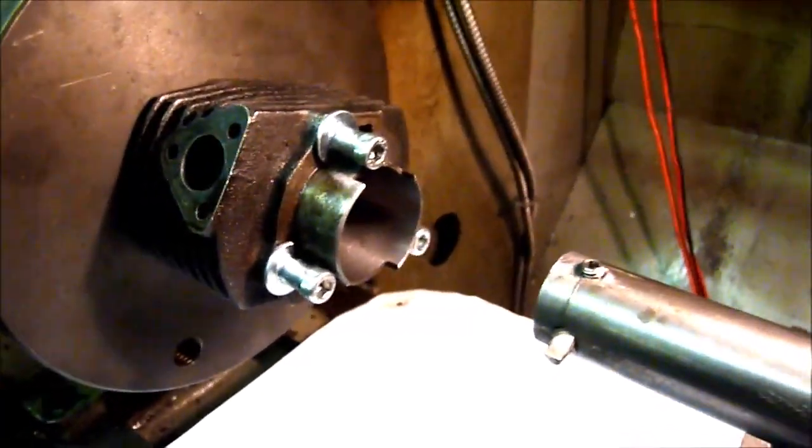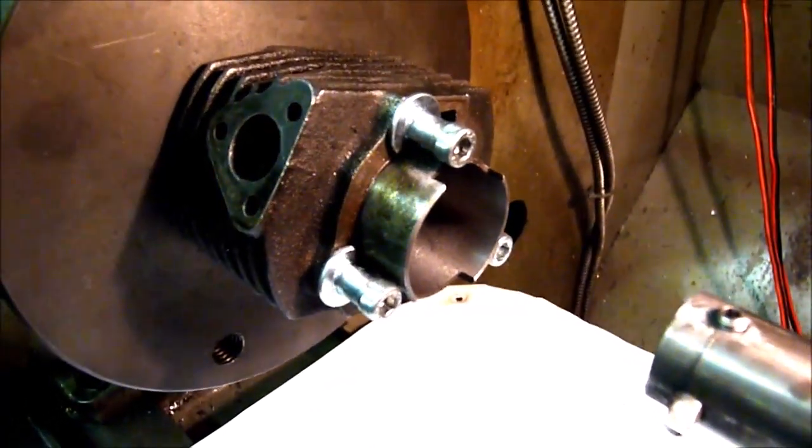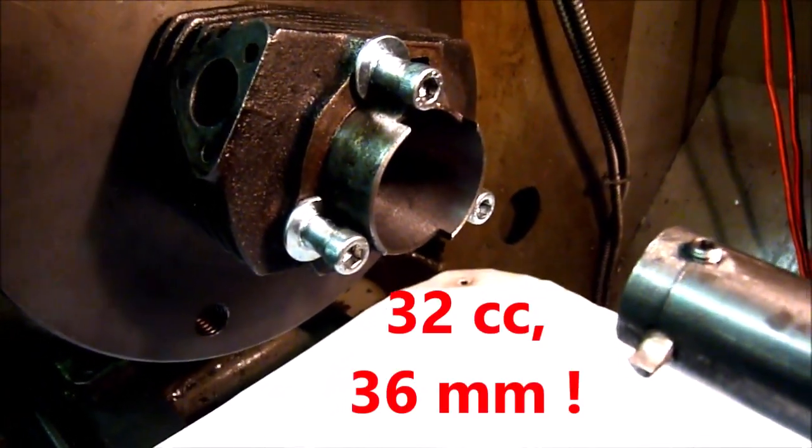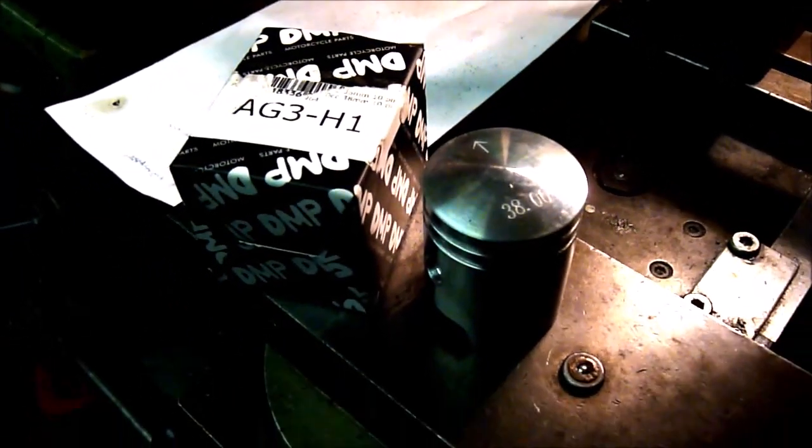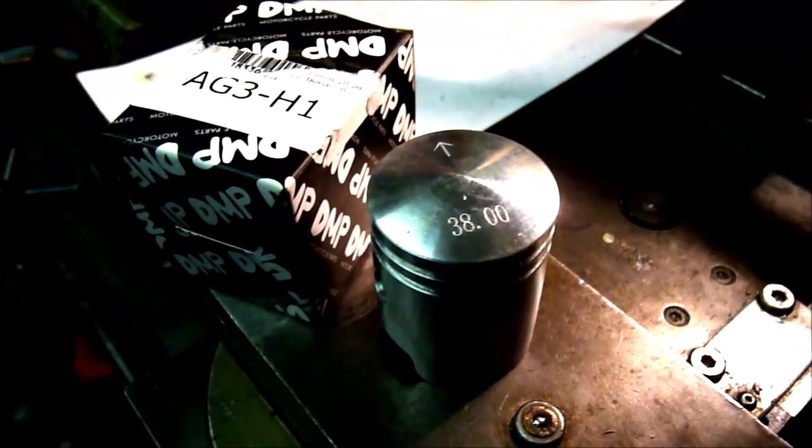I'm having a go at reboring this Norman Cyclomate cylinder. It's 32mm diameter and I'm taking it out to 38mm because that's the only size piston that seems to be available, although this is from a Poosh Tomas moped.